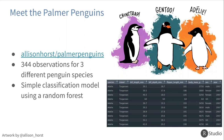We've got the species, the island they came from, and some different measurements from each penguin: bill length, bill depth, flipper length, body mass, the sex of the penguin, and the year the measurement took place. This could be any dataset — most data science and analytical problems start with some data, and that felt like a natural place to start today.